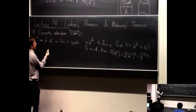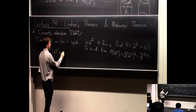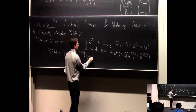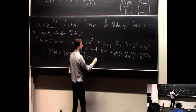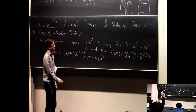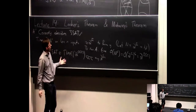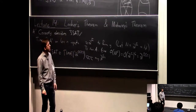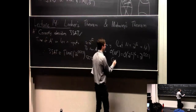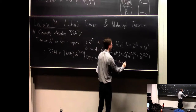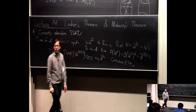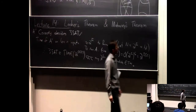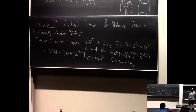Therefore we have an algorithm that decides 3SAT in time 2 to the O(root n). But this is much smaller than 2 to the delta n. The exponential time hypothesis says any algorithm for 3SAT has to take something like 2 to a constant times n time, yet magically we're doing it in time 2 to the constant times root n. This contradicts ETH. So now we've shown that L is not in P.